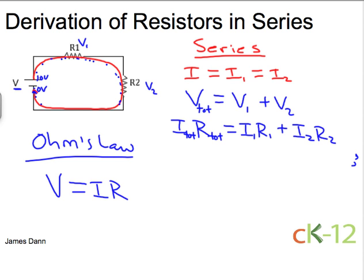Now, since the currents are all equal, we can just write I as I. And then we have R total here, which equals I R1 plus I R2.